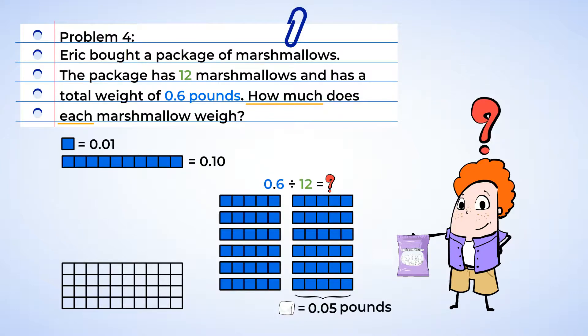Now just out of curiosity, did you happen to see another way you could solve that problem? Well, you may have connected six-tenths with the number sixty, like in the first problem. And since sixty divided by twelve is five, well, we can connect that to sixty-hundredths, or six-tenths divided by twelve. Just make sure that the decimal is in the correct place.